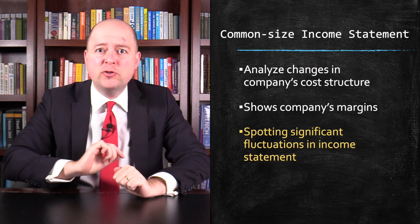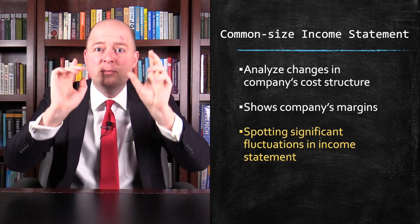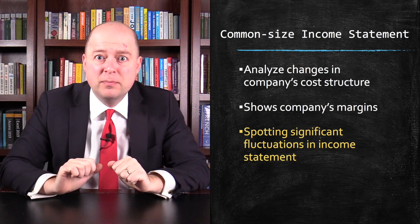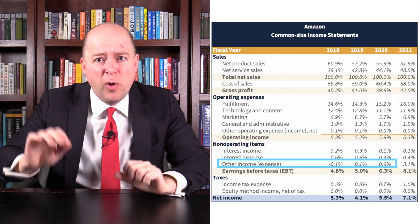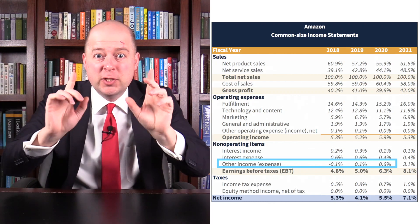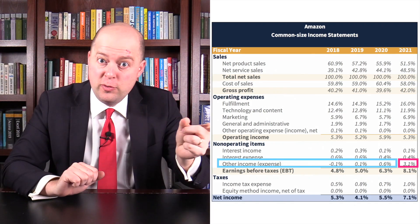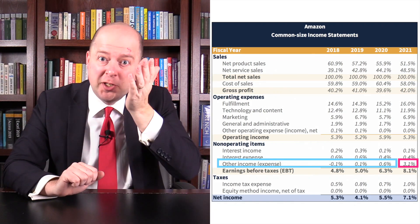The common-size income statement is also helpful in spotting significant fluctuations in a company's income statement items over time. With Amazon, we see that non-operating revenue is typically a very small percentage of Amazon's total net sales. But in 2021, it jumped to 3.1%, because Amazon recognized an $11.8 billion gain on its investment in Rivian when the company went public.